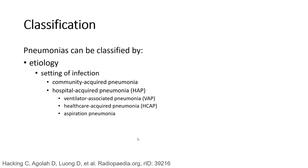Pneumonia can also be divided by setting of infection. If the infection comes from outside the hospital, we call it community-acquired pneumonia. If pneumonia occurs in the hospital, we call it healthcare-acquired pneumonia. Aspiration pneumonia is also a recognized category.